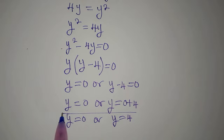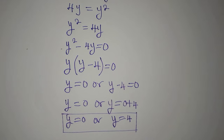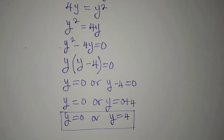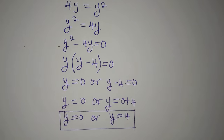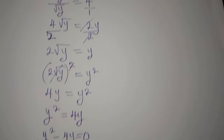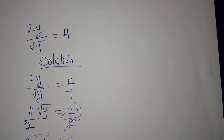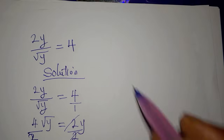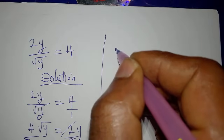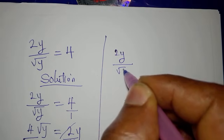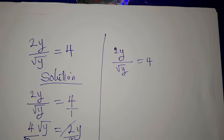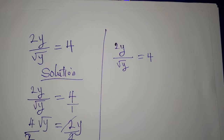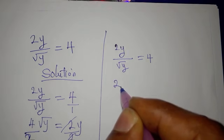Those two solutions came from the first method, but only one will satisfy the original equation. Let's use the second method and see what solution we get. So let me use the other side of the paper — we are still looking at 2y over square root of y equals 4.